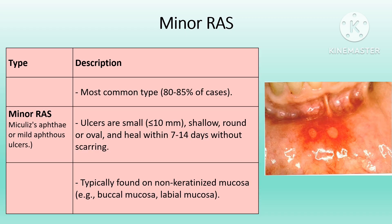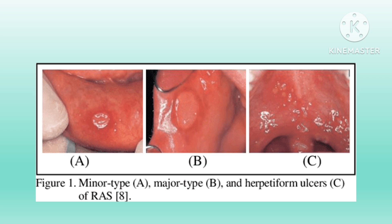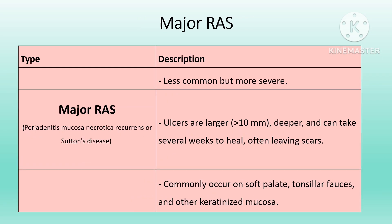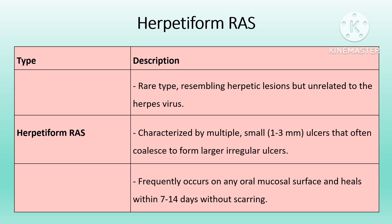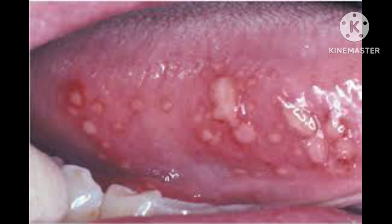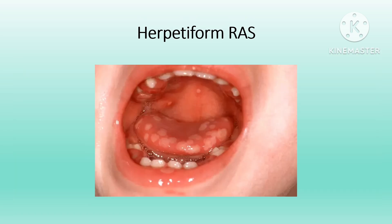Major aphthous ulcers differ from minor in size (more than 1 cm), pain intensity, and healing time — usually several weeks — and may result in scarring after healing. The third subgroup, herpetiform ulceration, is the least common form of RAS. These are multiple pinpoint ulcers of 1–3 mm, markedly painful, that fuse into larger ulcers after a few days. They take approximately 14 days to heal but do not scar, helping to differentiate them from major aphthous ulcers. They tend to affect the ventral tongue and upper lip.